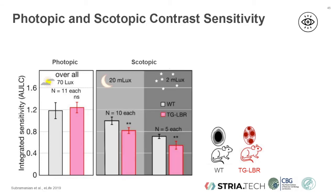However, when we measured the contrast sensitivity of the animals under scotopic conditions by putting appropriate dimming filters in front of the Optodrum monitor, contrast sensitivity measured behaviorally was significantly better in the wild-type mice that have the nuclear inversion. During nighttime conditions, nuclear inversion grants an exclusive and significant advantage.